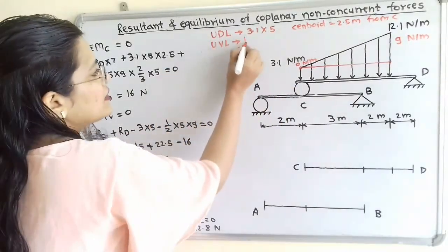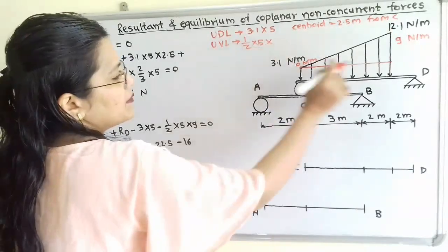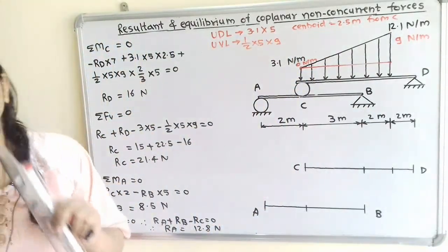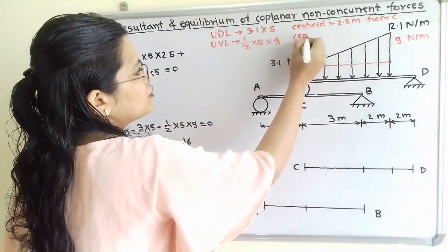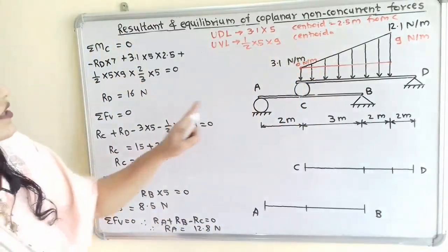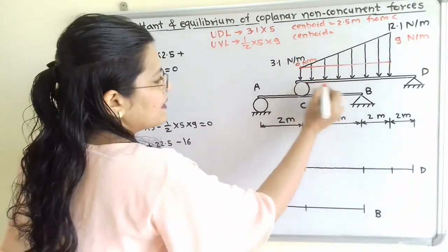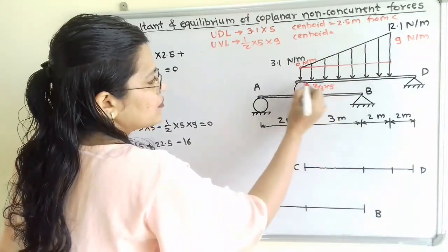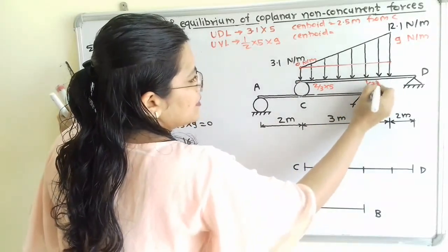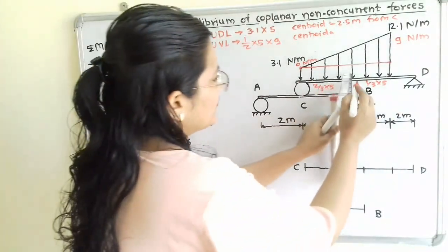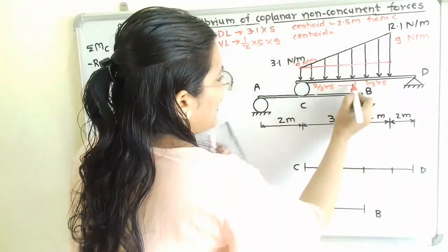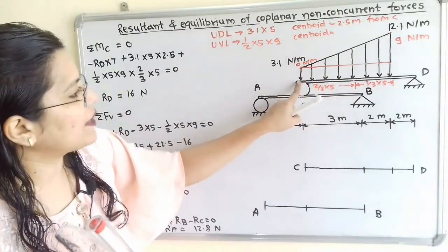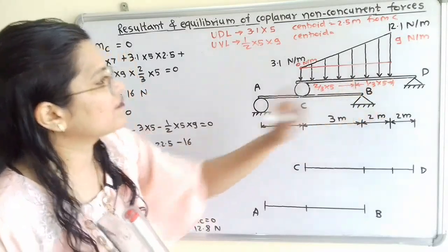The magnitude is half × 5 × 9. The centroid — that is the point of application of this triangular load — is at 2/3 multiplied by the total span of 5 m from the left-hand side, and 1/3 × 5 from the right-hand side.